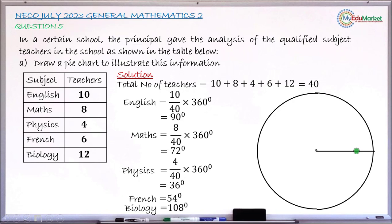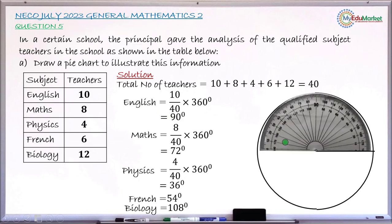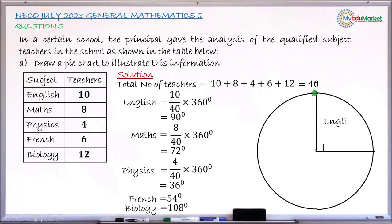So I am going to place my protractor here so that I will now measure this angle 90 degrees exactly for this sector representing English teachers. Let me just make a small dot there. This is now 90, so I will remove the protractor and draw a line from where I made that very dot. This now represents the English teachers.